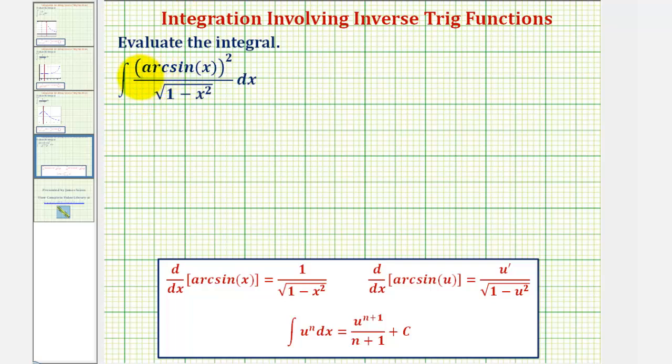We want to find the antiderivative of arc sine x raised to the second divided by the square root of the quantity one minus x squared with respect to x.